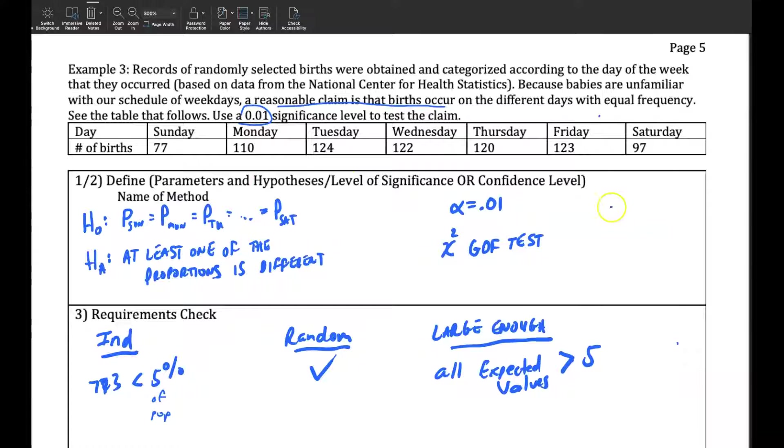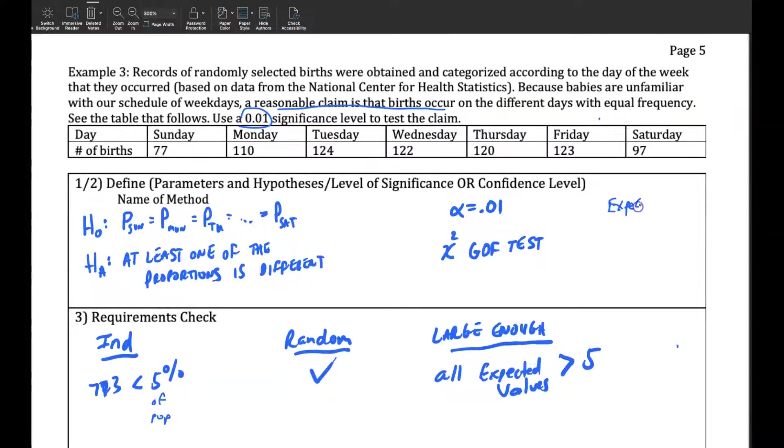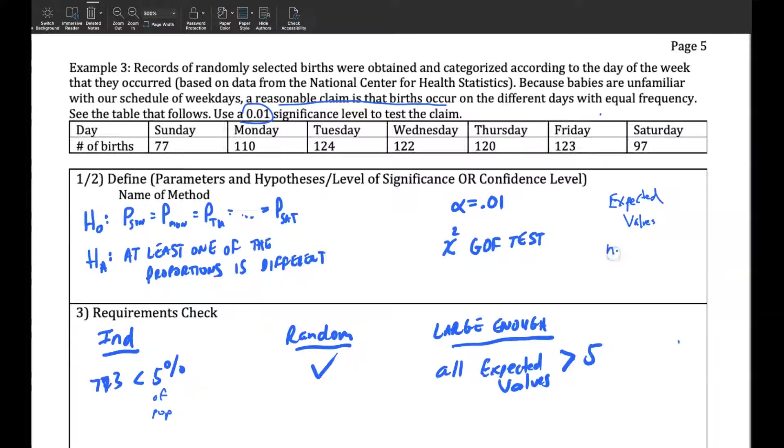and it's large enough all the expected values are greater than 5. Now, the expected values, that's where I need to do a little calculation, because we need expected values. Well, let's make sure we know it's greater than 5, is what you would do is, it's really just n times p.